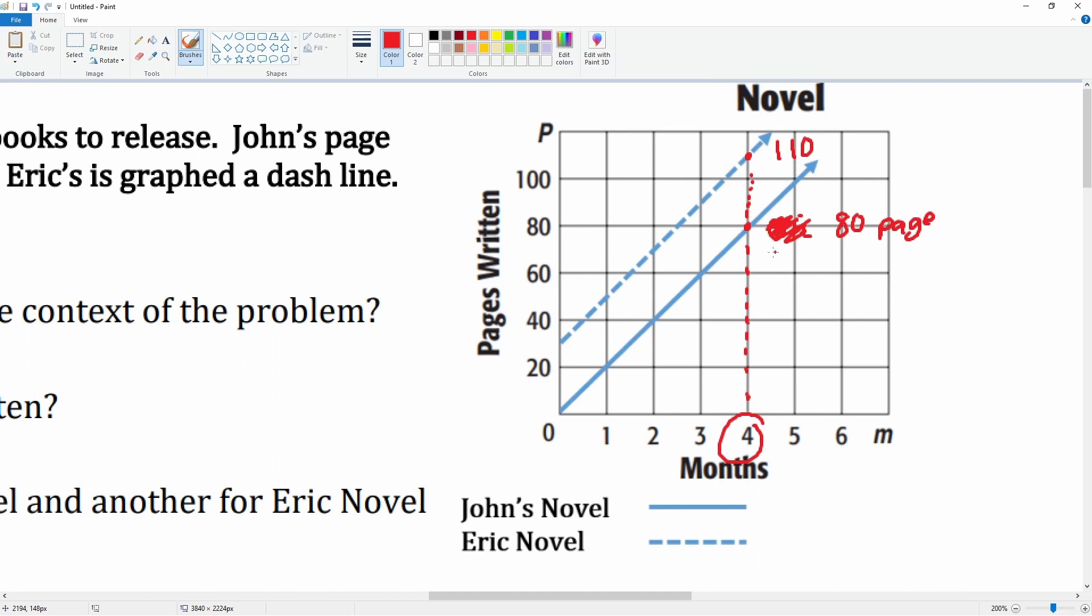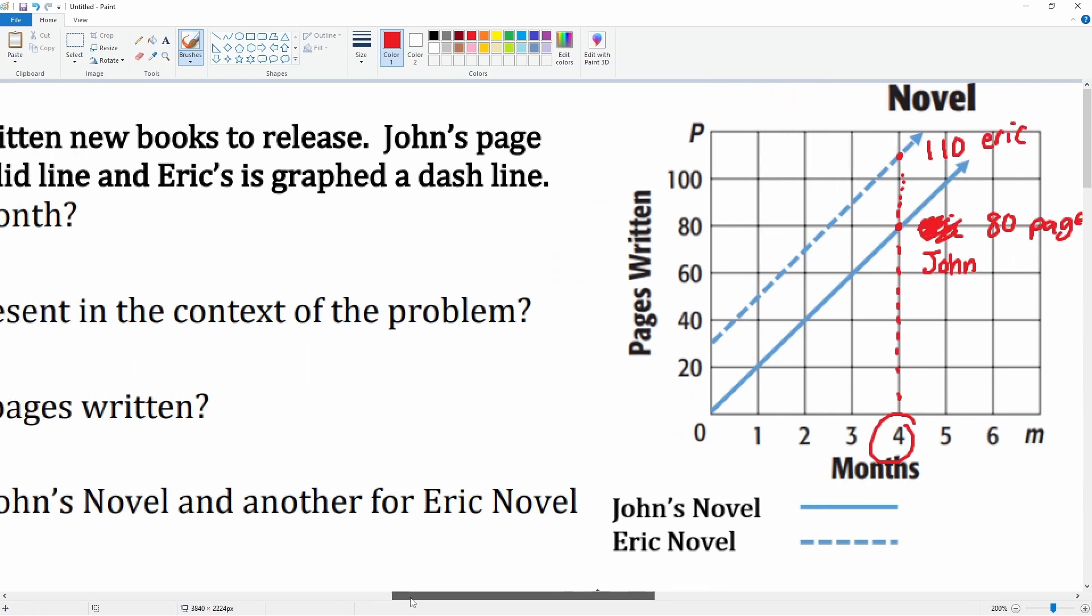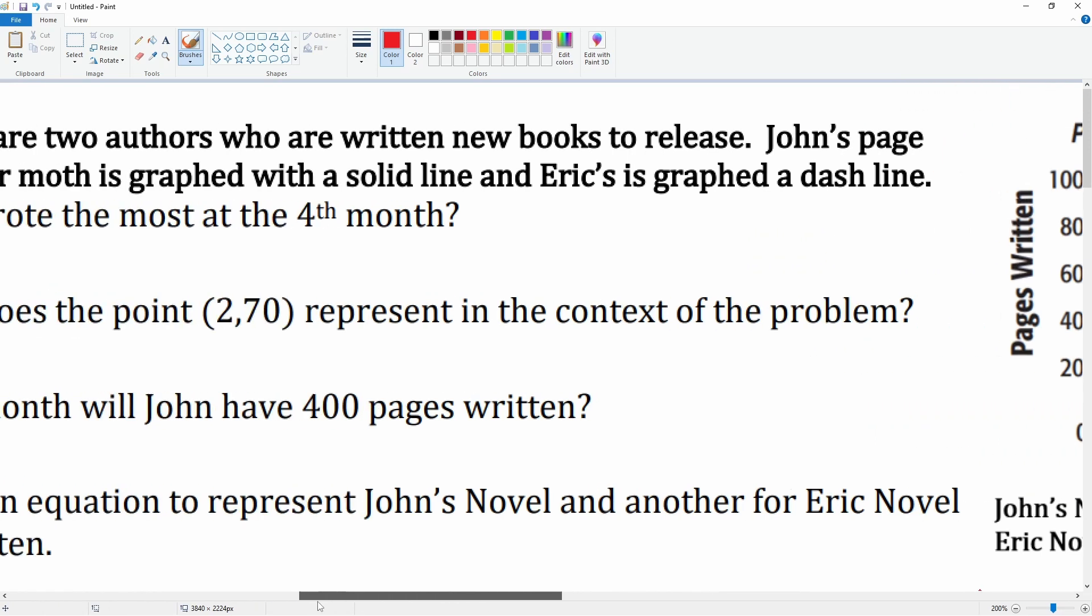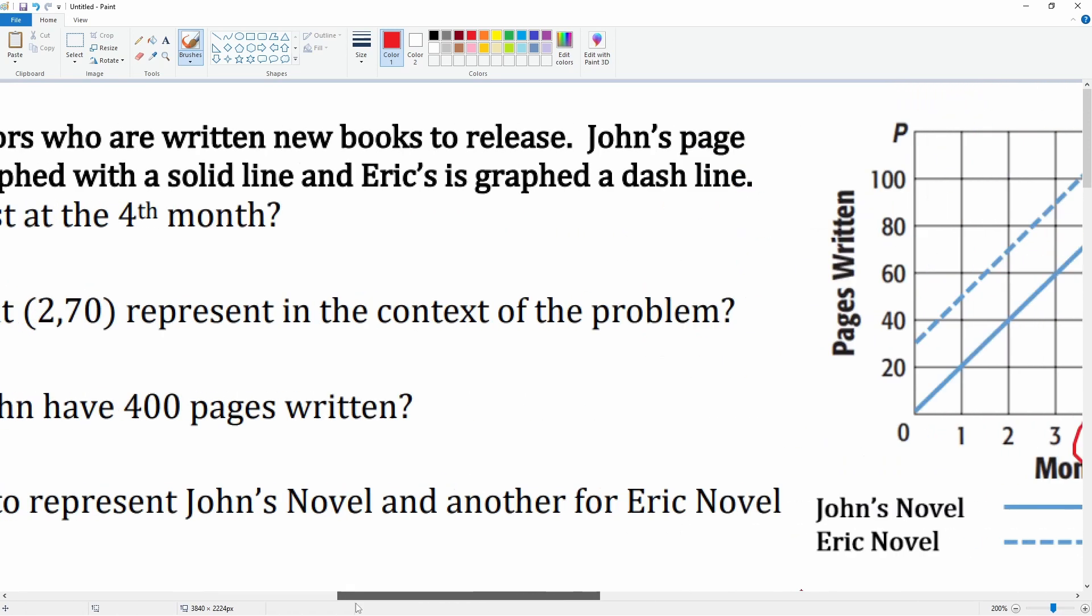This is John, okay, because the dashed line is Eric's. So looks like Eric did 110 pages at the fourth month. So we can say it is Eric with 110 pages at the fourth month.